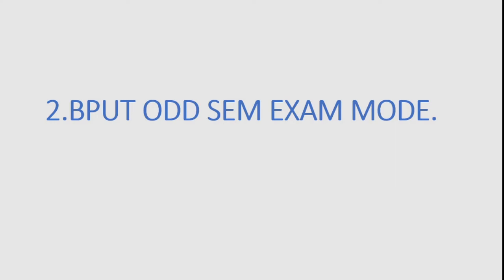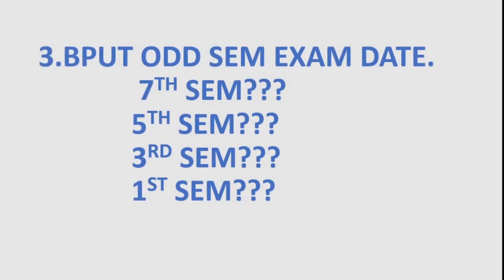For seventh semester students, your trial test will come, so at minimum expect your exam in the second week of March — prepare accordingly. For fifth semester students, according to the modified academic calendar, your fifth semester examination will be in the third week of March, or at the latest the last of March to the first week of April.